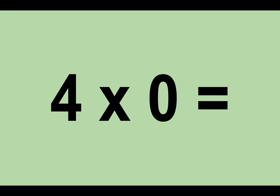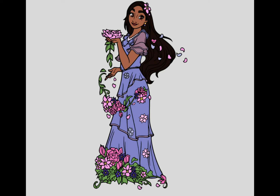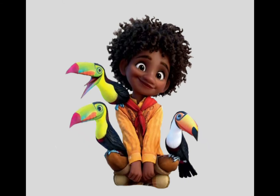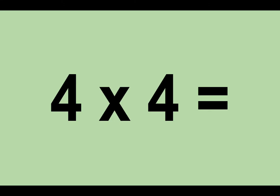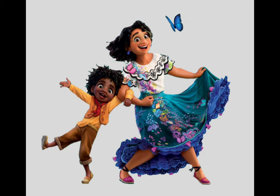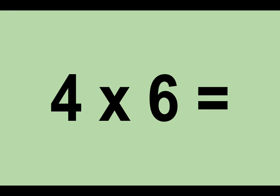Four times zero equals zero. Four times one equals four. Four times two equals eight. Four times three equals twelve. Four times four equals sixteen. Four times five equals twenty. Four times six equals twenty-four.